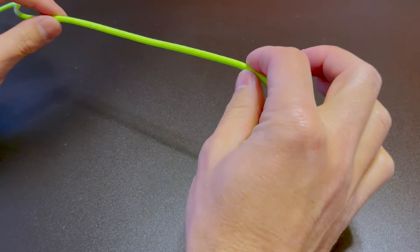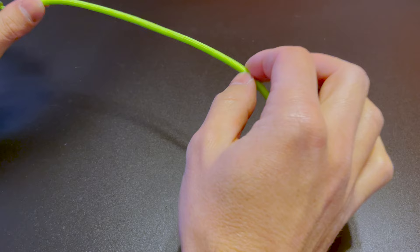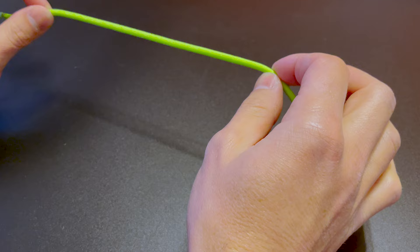I want to show you how to tie one of my favorite line-to-line knots. It is the John Collins knot, also known as the RP knot or Royal Polaris knot, but it's really just a simplified version of the Alberto knot.